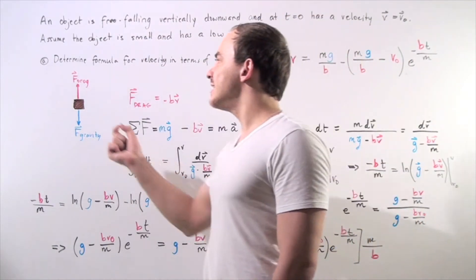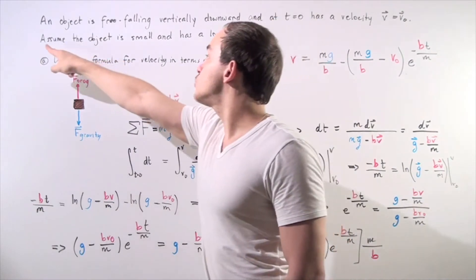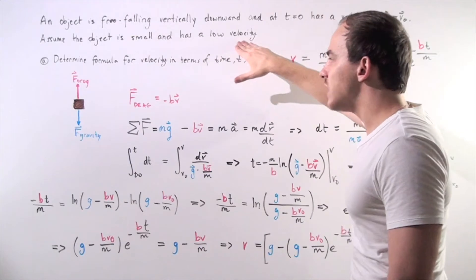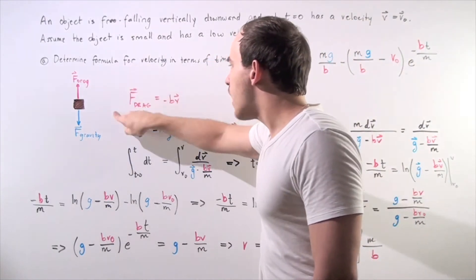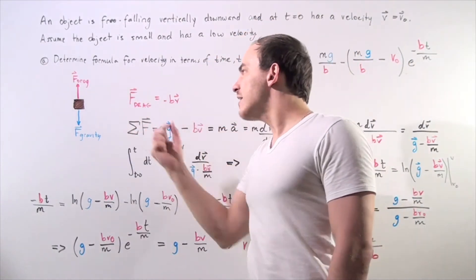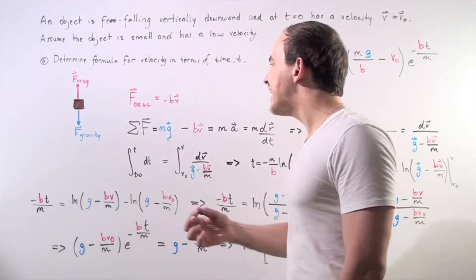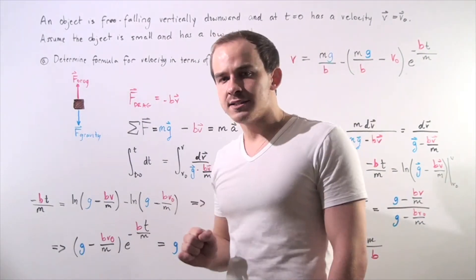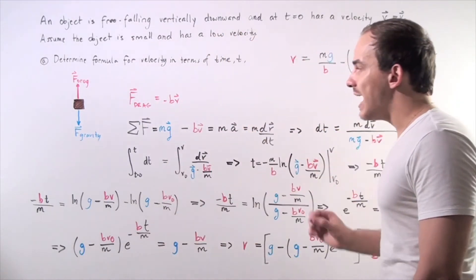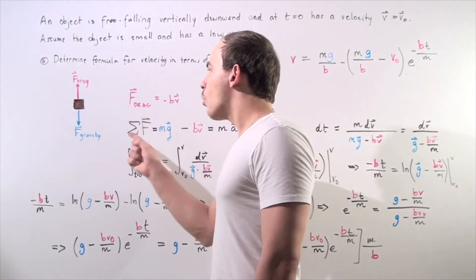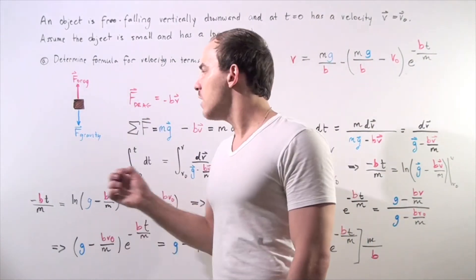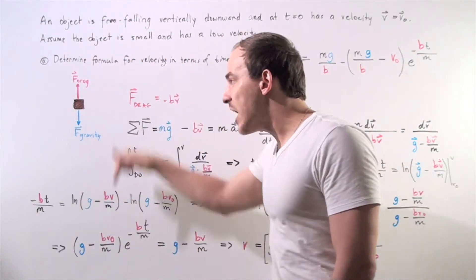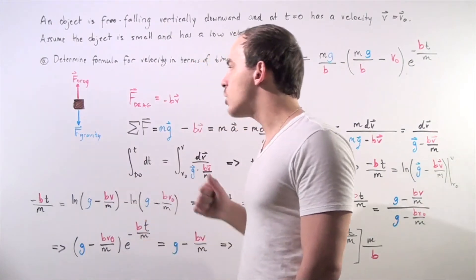What exactly is the formula for F-drag? Because our object is small and has a low velocity, we can use the following formula for drag: the drag force is equal to negative b times v, where b is simply our proportionality constant, v is our velocity, and the negative sign simply means our force is in the opposite direction of motion. So gravity points downward and drag points upward. We choose downward to be positive because our object is moving downward.